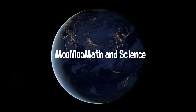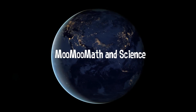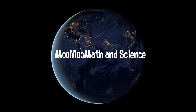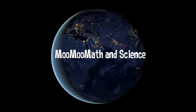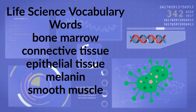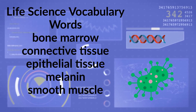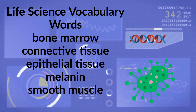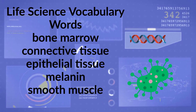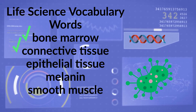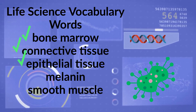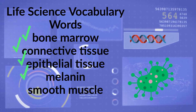Welcome to Moo Moo Math and Science. In this video I will cover some life science vocabulary: bone marrow, connective tissue, epithelial tissue, melanin, and smooth muscle. So let's get started.